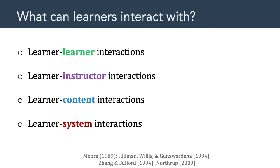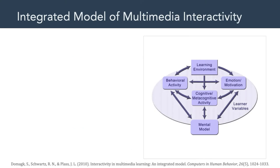In this class, we're making the assumption that there's a single learner interacting with content and a multimedia system. So of these four types of interactions, we're focused on learner-content and learner-system interactions. With that background model, we read about the integrated model of multimedia interactivity, which was proposed by Domak and colleagues.